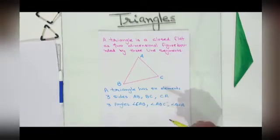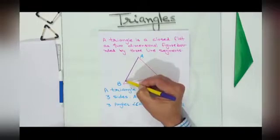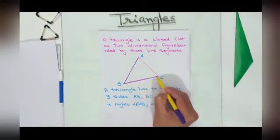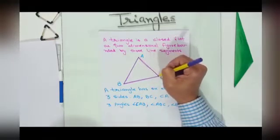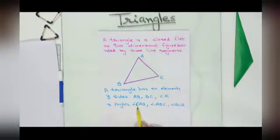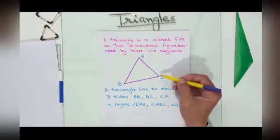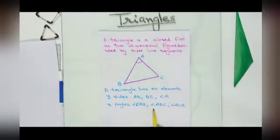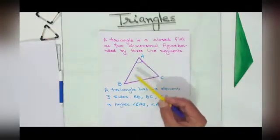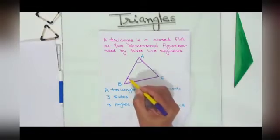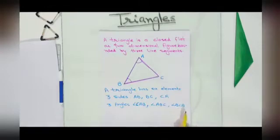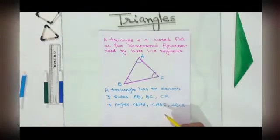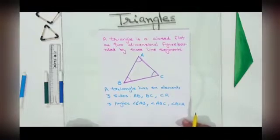In the given triangle we can observe that it contains three sides: AB, BC, and AC, and three angles: angle CAB, angle ABC, and angle BCA. So it is obvious that our triangle contains six elements and we can describe a triangle under these six elements.